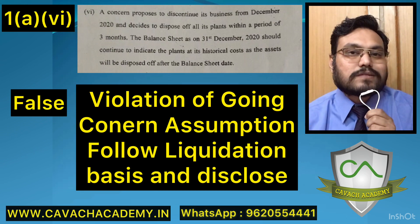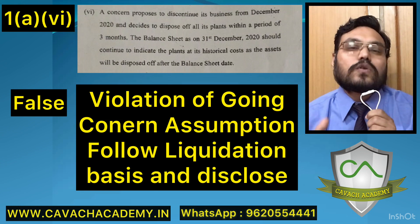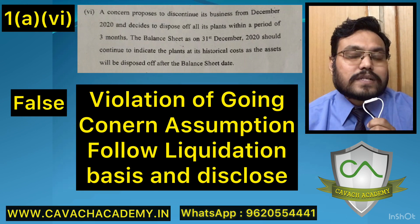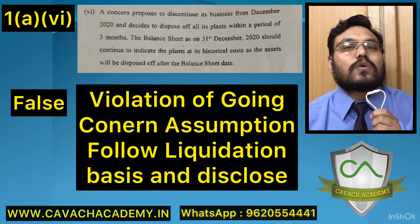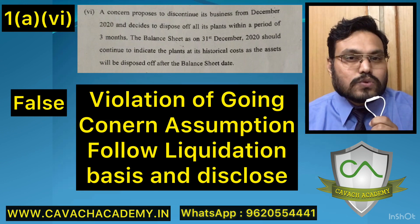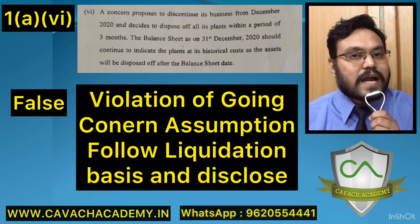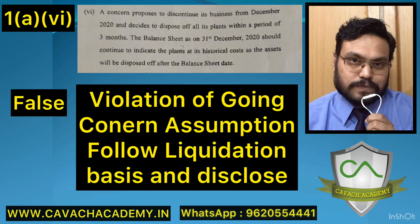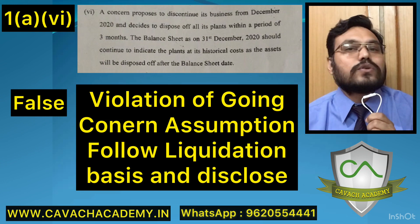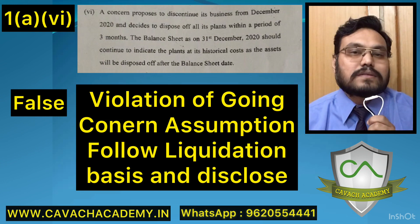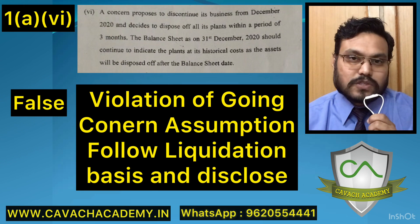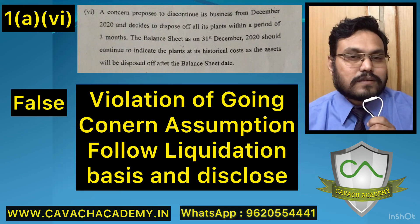Since the company has already decided to discontinue business from 2020, for the foreseeable future it is not going to continue operations, so the going concern assumption is not applicable. Therefore, do not show the assets at historical cost. Instead, choose a different basis — such as liquidation basis — and disclose that basis as per AS 1. The answer is FALSE: you should not continue showing the plants at historical cost.